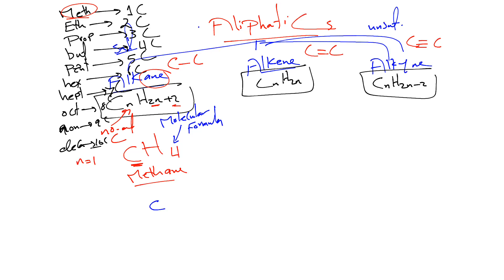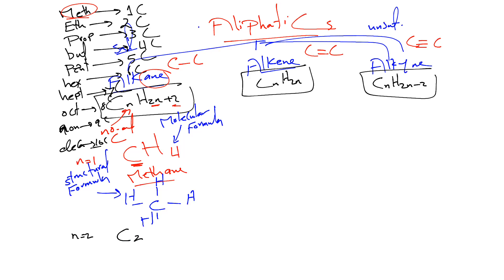The molecular formula of methane is CH₄. Let's draw the structural formula of methane. You have one carbon, and keep in mind that around each carbon we have four covalent bonds. This structural formula shows the bonds between the atoms. For n=2, using CₙH₂ₙ₊₂: 2×2+2=6, so the formula is C₂H₆.